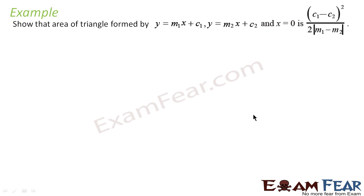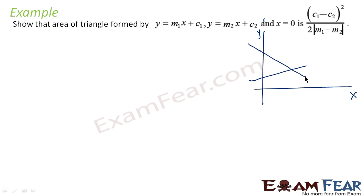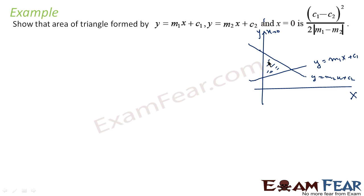The area of the triangle formed by Y equals M₁X plus C₁, Y equals M₂X plus C₂, and X equals 0 is (C₁ minus C₂)² divided by 2 times |M₁ minus M₂|. Let's draw the lines first. We have two lines and X equals 0 (the Y-axis), forming triangle PQR, with P being the intersection of the two lines.